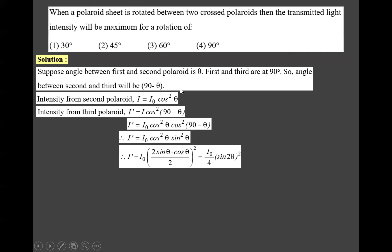We want maximum transmitted intensity. It implies that we must have sin 2theta maximum, and maximum value of sin is 1. So I' maximum will be for sin 2theta equals 1. We know sin 90 equals 1. Therefore, theta must equal 45 degrees.